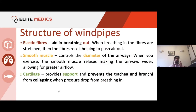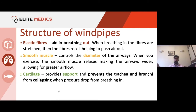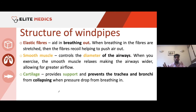Within these four parts of the respiratory tree — trachea, bronchi, bronchioles, alveoli — we have structural components throughout to control air movement. Firstly, elastic fibres: they aid in breathing out. Think about elastin as a protein — we looked at it in the cardiovascular system in the tunica media of blood vessels for maintaining constant blood pressure. In the context of gas exchange, elastic fibres aid breathing out.